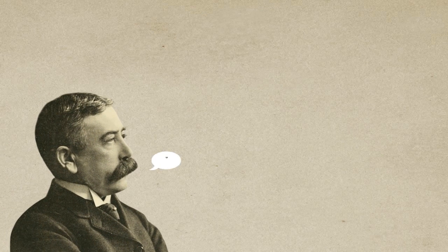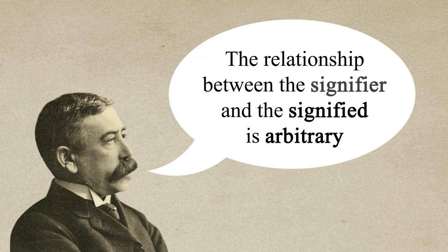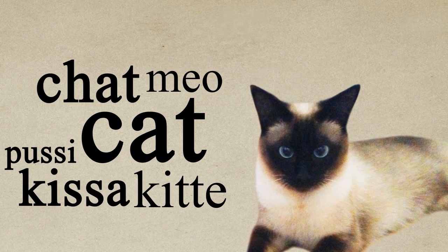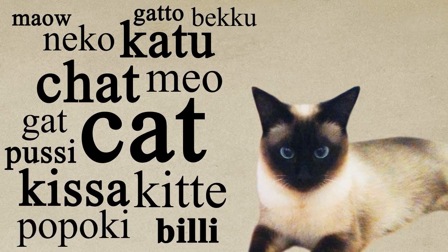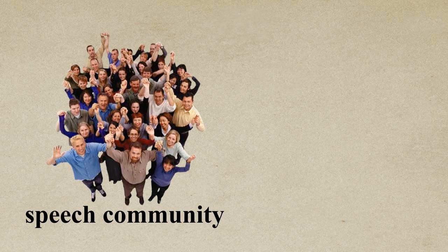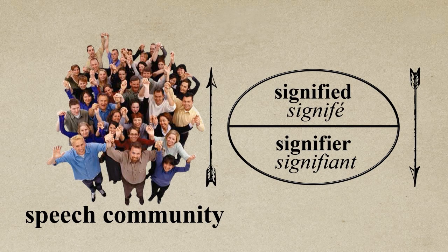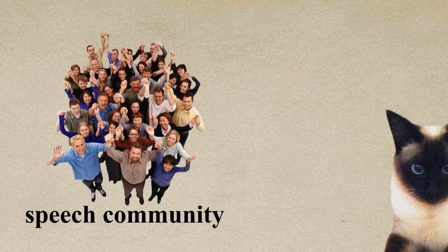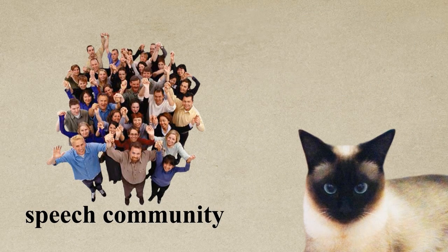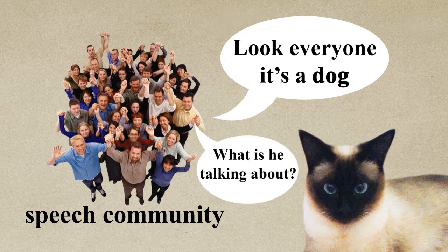Secondly, Saussure highlights that there is an arbitrary and conventional relationship between a signifier and its signified. Arbitrary because there's no natural reason why we call a cat a cat, and that's why different languages have different words for the same thing. The convention of language refers to the idea that a speech community needs to adhere to the same connections between a signifier and its signified. For example, English speakers all share a very similar concept of cat when they hear that word. I can't just start calling a cat a dog and expect anyone to know what I'm talking about.